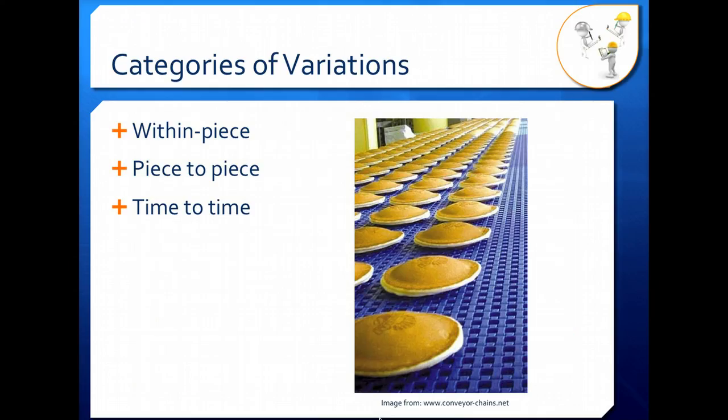There are three different categories of variations. There's within-piece variation—if we look at these pancakes on the right, within-piece variation would be the color differences along the top of the pancake. We have different color up top than on the side. It's talking about variation within the exact same object.